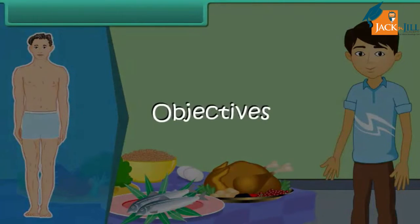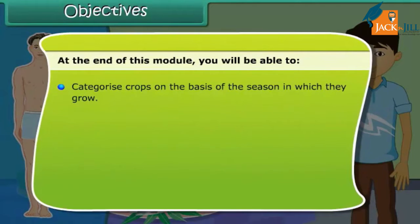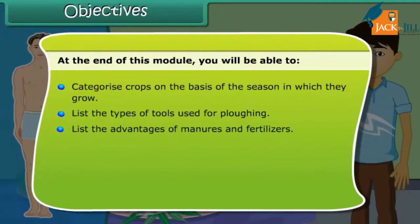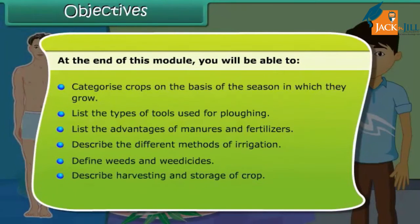At the end of this module, you will be able to: categorize crops on the basis of seasons in which they grow; list the types of tools used for plowing; list the advantages of manure and fertilizers; describe the different methods of irrigation; define weeds and weedicides; describe harvesting and storage of crops; and explain animal husbandry.